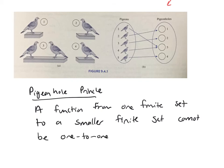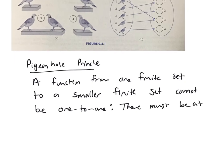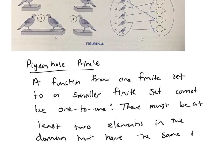So remember one-to-one, this is probably something you learned back in college algebra, but basically what do we mean by one-to-one here? There must be at least two elements in the domain that have the same image in the codomain.